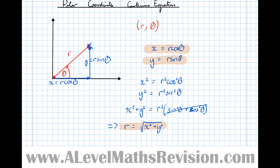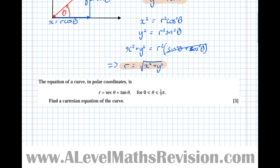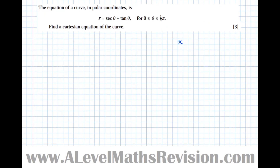So let's now have a good example question. This question says the equation of a curve in polar coordinates is R equals sec theta plus tan theta, where theta can lie between 0 and pi over 3. Find a Cartesian equation of the curve. So we're going to use the three facts that we just derived: x equals R cos theta, y equals R sin theta, and R equals the square root of x-squared plus y-squared. That's all we need to be able to do this.